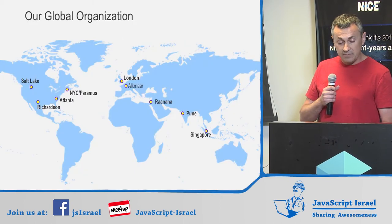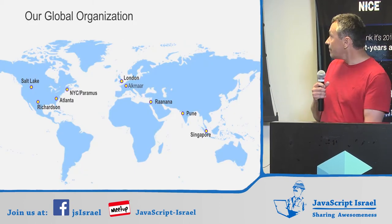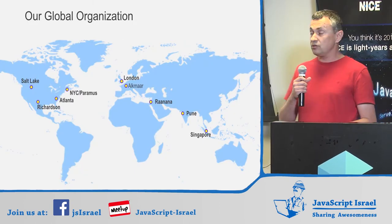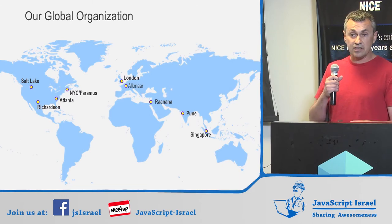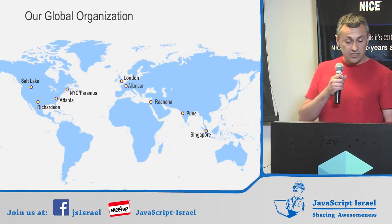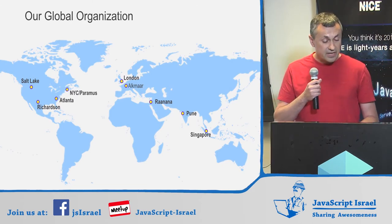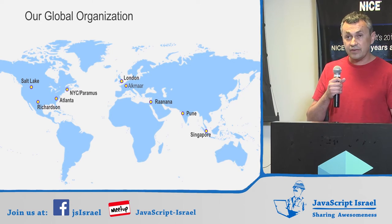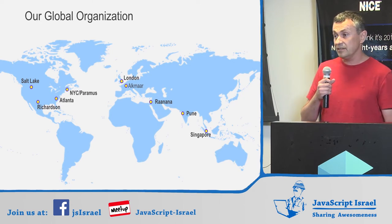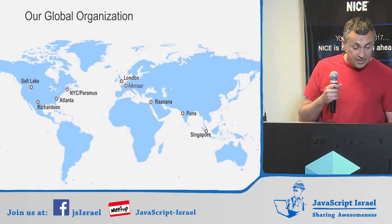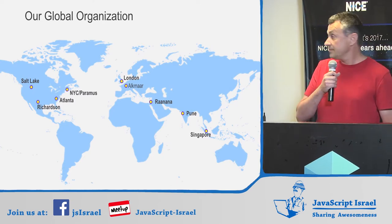We are a global company with a number of locations. Our development centers are located in Israel, one of our biggest developer locations. We also have offices in India and three locations in the United States: Richardson, Salt Lake City, and Atlanta.